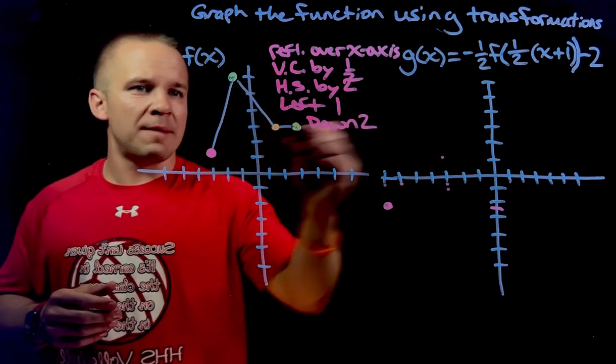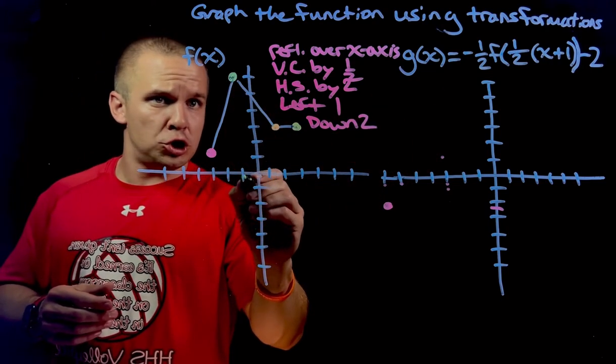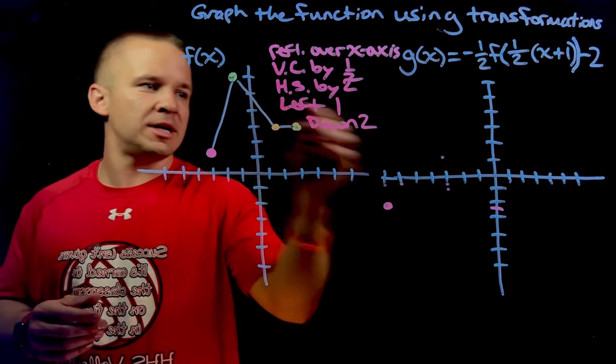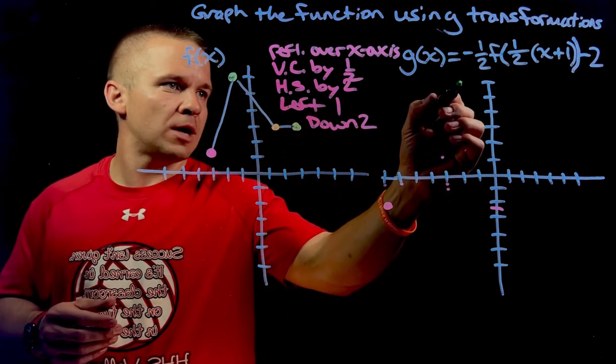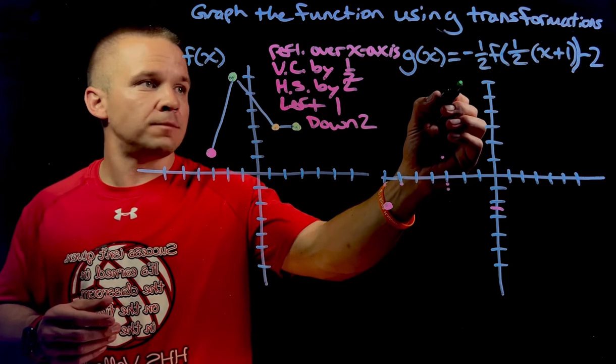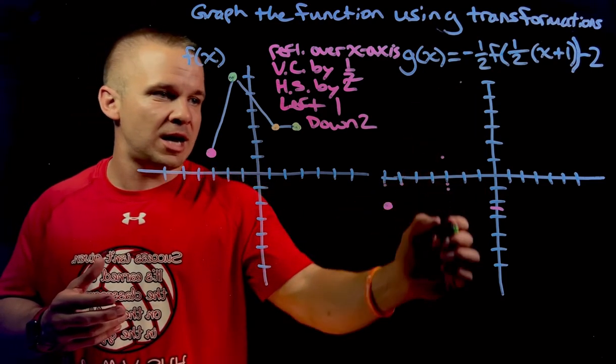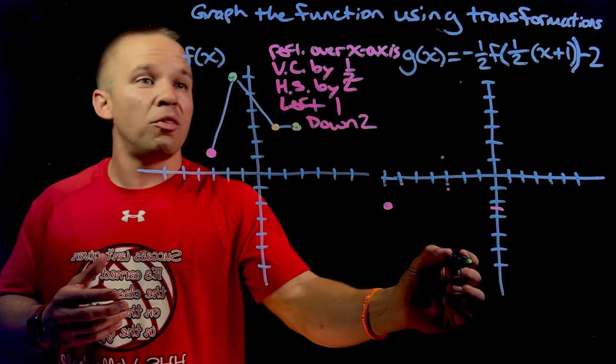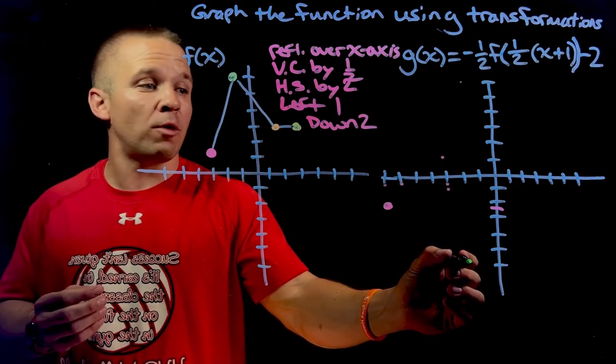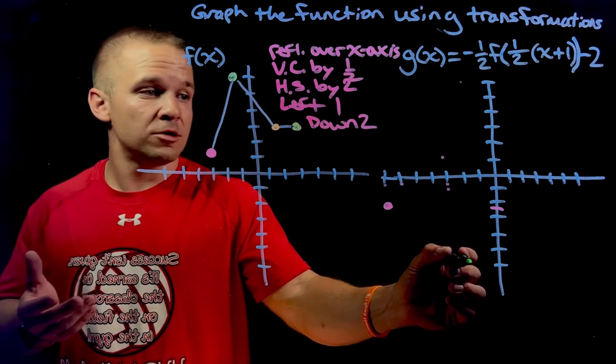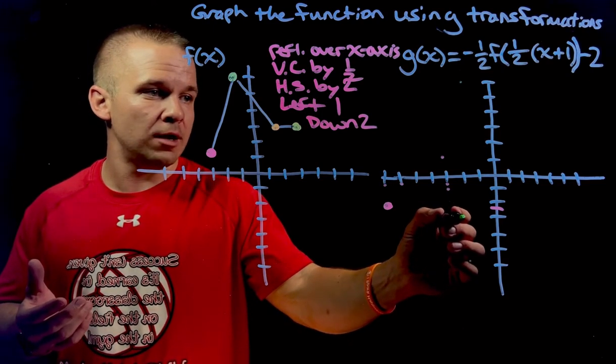We're going to start up here, which means I'm at, let's see here, negative two. No, yeah, negative two up at positive six. We're right up here. For this one, reflection over the x-axis. I'm all the way down at negative six. Then I got to do a vertical compression by one half. Negative six divided by two is negative three. I'm over here at negative three.